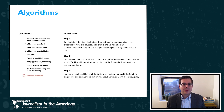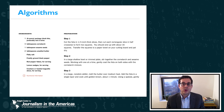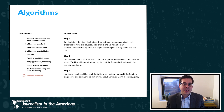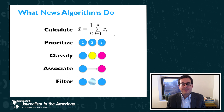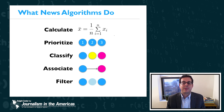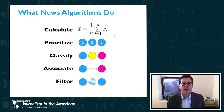Stepping back, an algorithm is a series of steps undertaken to solve a particular problem or accomplish a defined outcome. This recipe here is an algorithm, although it's one usually done by a person rather than a computer. We're mostly interested in algorithms that run on digital computers because that allows them to scale up and sometimes automate entire processes. There are five main ways algorithms are used in news-related information processing: calculation, prioritization, classification, association, and filtering. Sometimes these operations are chained together — for instance, summarizing an article might involve filtering away unimportant sentences and then prioritizing the remaining ones for an output summary.